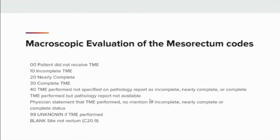Here we will look at the different codes implemented for the macroscopic mesorectum data item. Code 00: patient did not have a TME. Code 10: the TME was incomplete. Code 20: the TME was nearly complete. Code 30: the TME was complete. Code 40: the TME was performed but not specified on the pathology report as incomplete, nearly complete, or complete. Code 90: the TME was performed but the pathology report was not available, or you have a physician statement that a TME was performed but no mention of incomplete, nearly complete, or complete status. Code 99: unknown if TME was performed. This field would be left blank if the site is not rectum, possibly coded as C20.9.